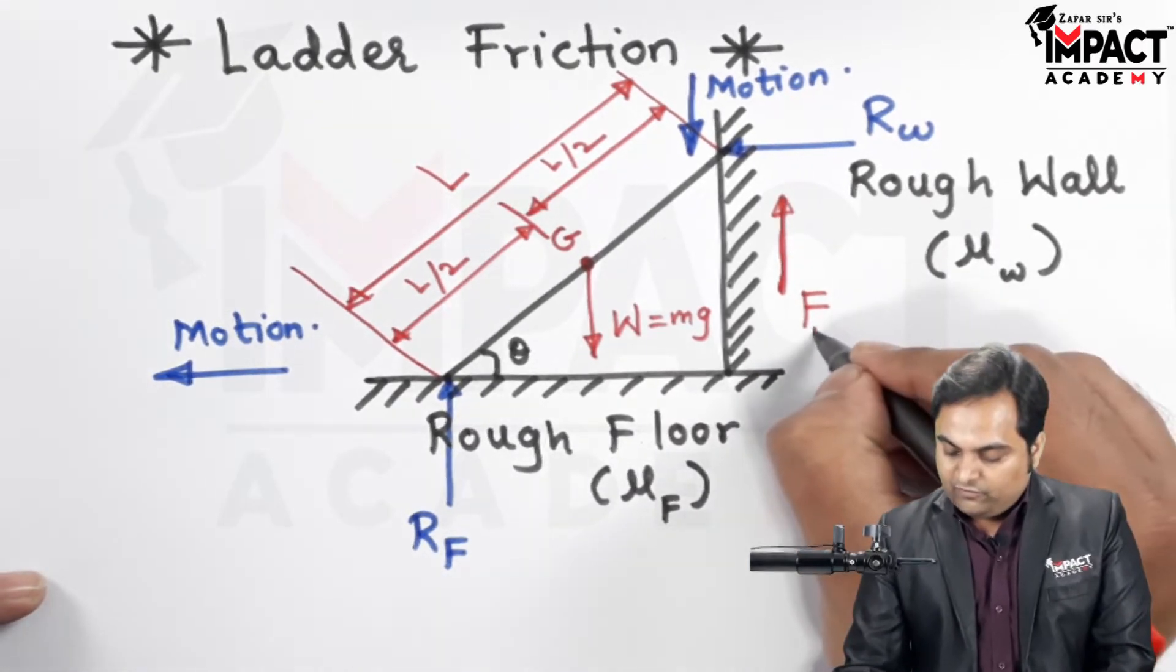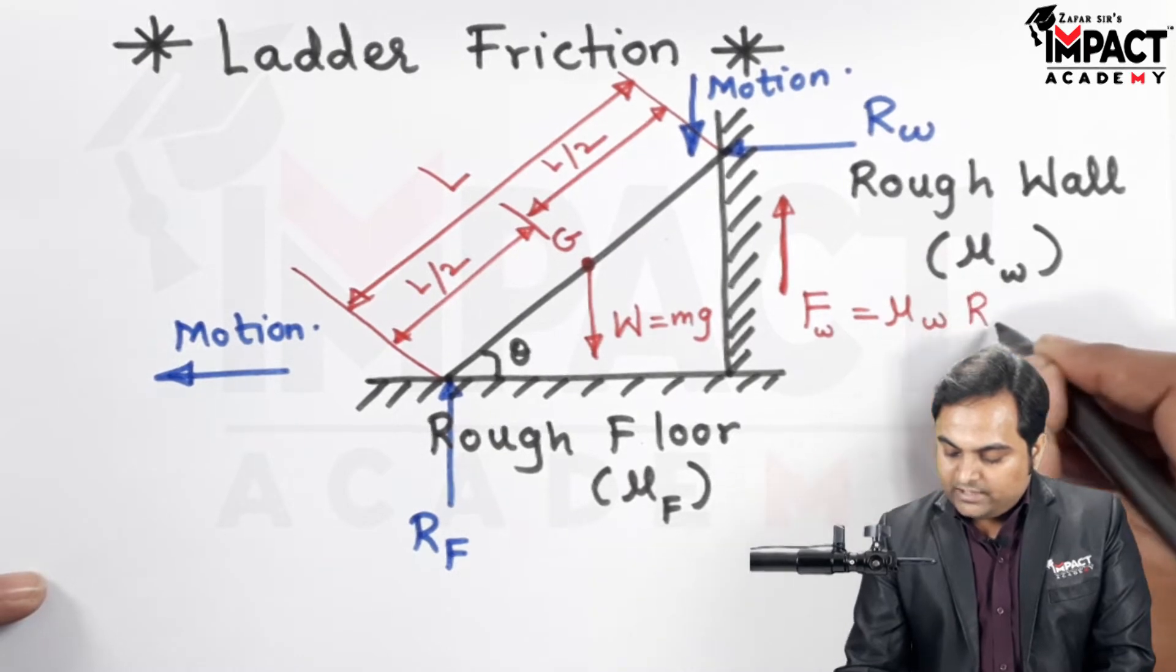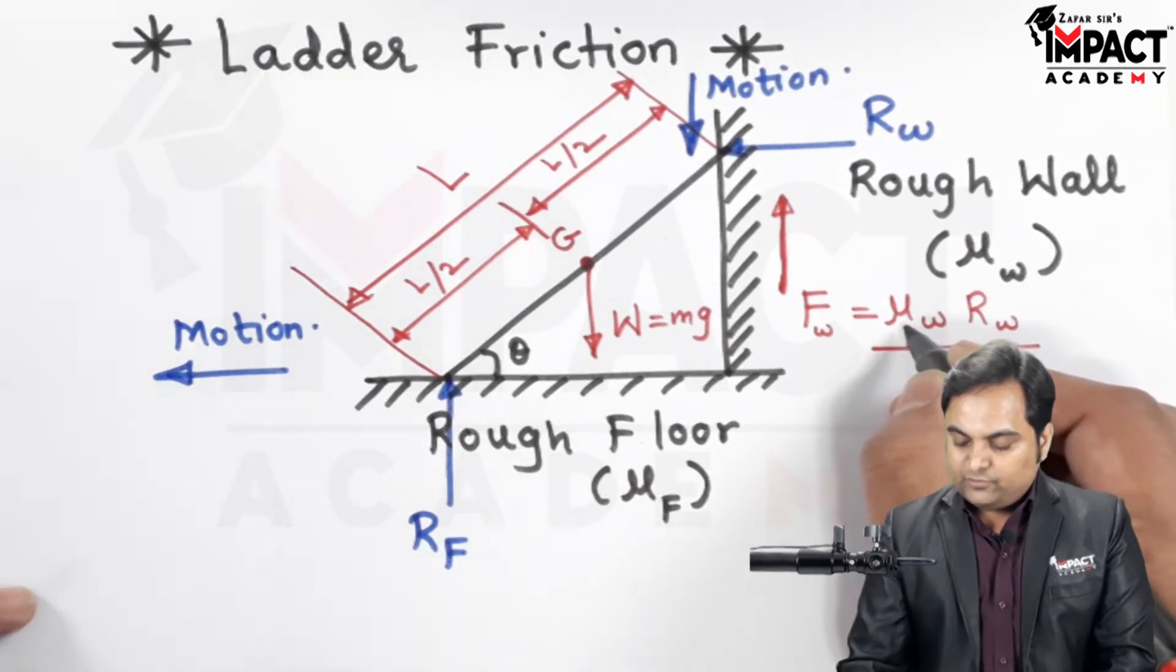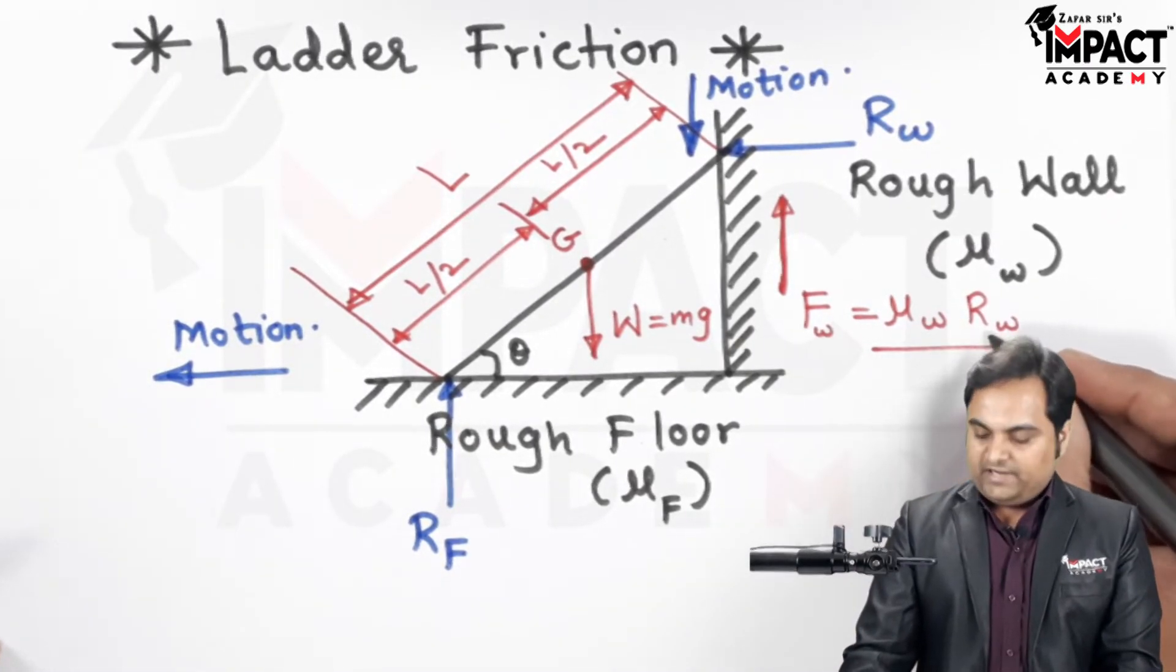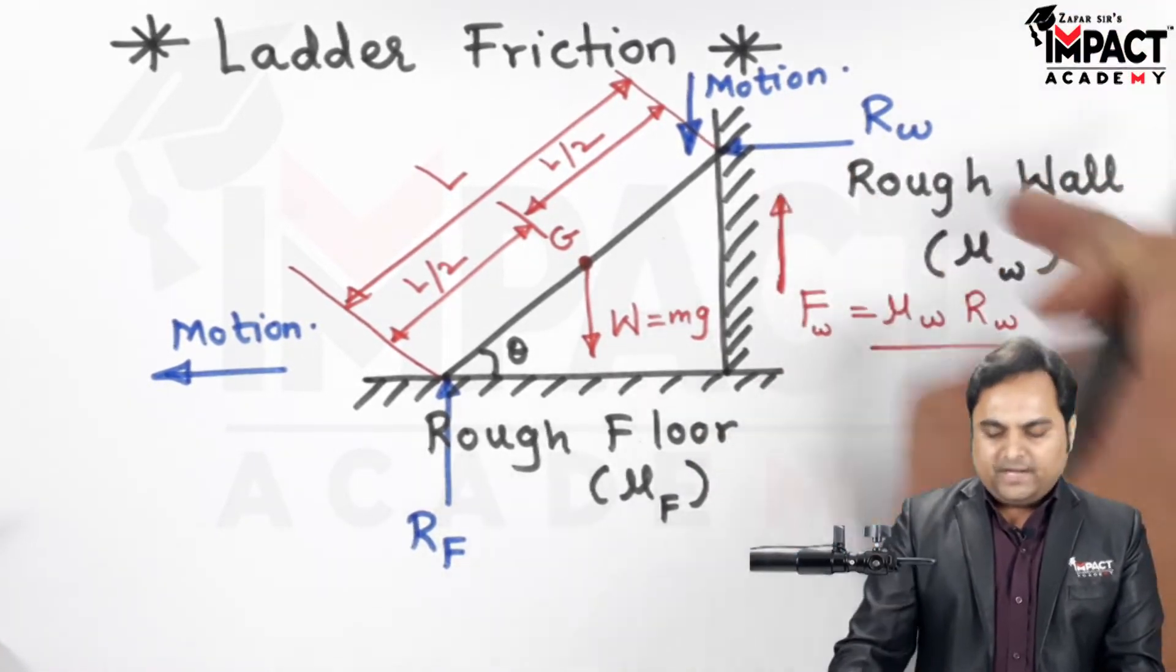It is for wall, so F suffix w, that will be mu w into R w, since the friction force is coefficient of friction into normal reaction. So that is the force of friction offered by the rough wall.